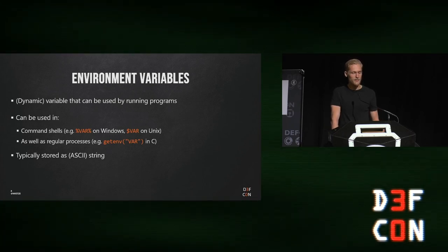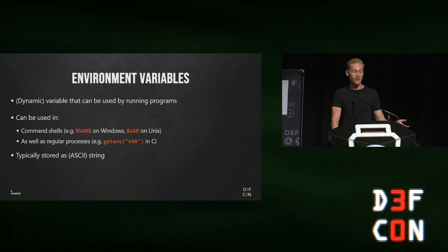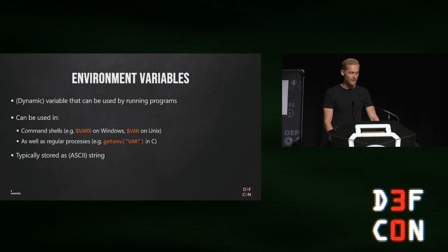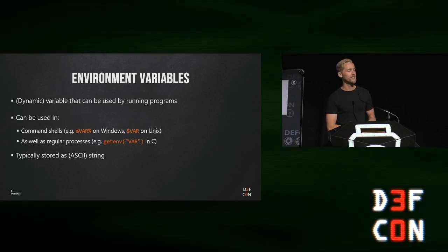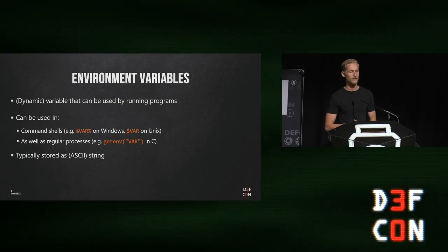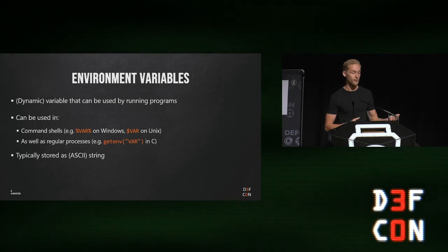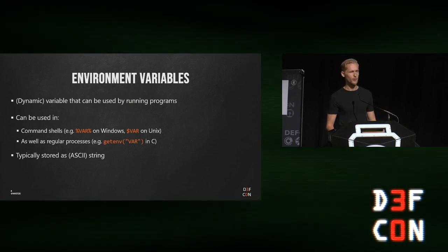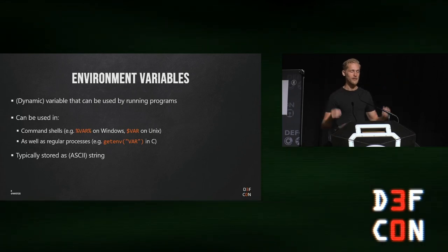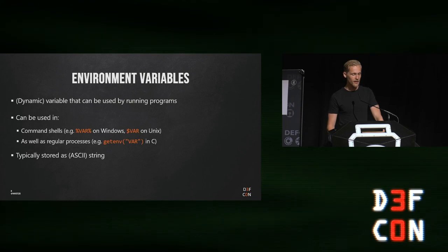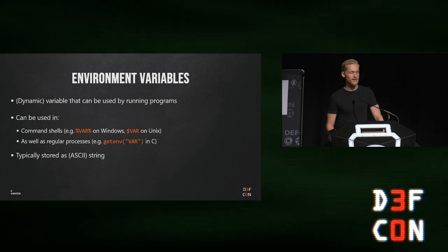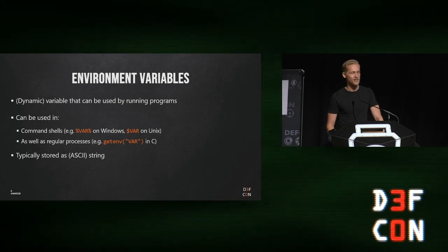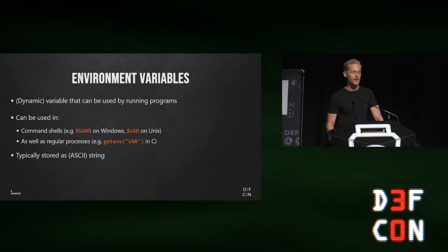In Windows you have this too. In the command prompt you can set an environment variable and leverage it using the percentage sign — percent, var, percent — to get the variable contents. What you would almost forget is that processes can also leverage it. Any process can call, for example from C, the function getenv with the variable name and it would return the value set in your environment. After all, an environment is like your system or your shell — it's in the scope of your system. It's stored as a string, typically even an ASCII string, so integers and booleans have to be converted or cast yourself.